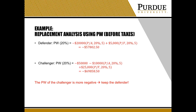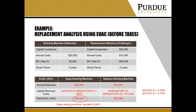Next, I evaluated this replacement analysis using the EUAC method. I took the exact same cash flows laid out before and put them into a table, and I evaluated the total EUAC, which is the sum of the annual expenses and the capital recovery costs. Just as before, keeping the existing machine would be the best alternative because the EUAC turned out to be smaller for the Defender.